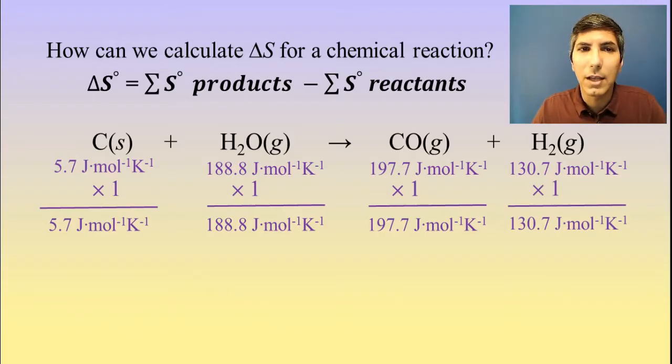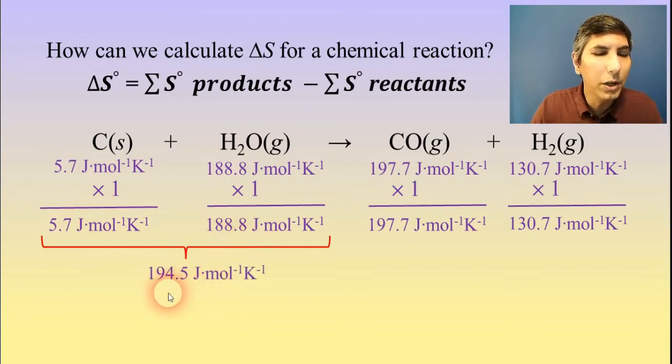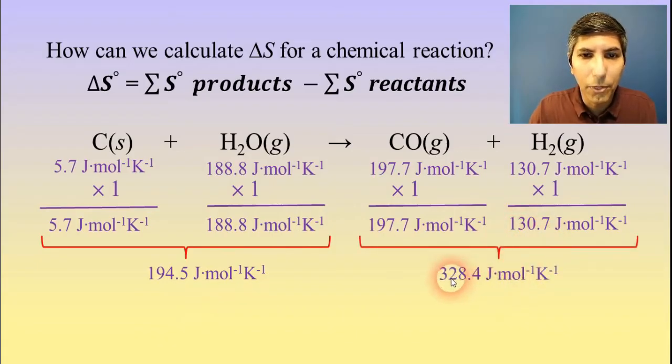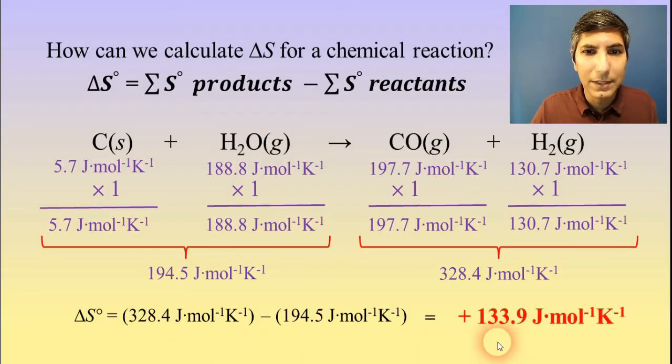Now what we're going to do is take the sum of the products and subtract the sum of the reactants. So if we take the reactants over here, 5.7 plus 188.8, that adds up to 194.5 joules per mole per Kelvin. On the product side, 197.7 plus 130.7 gets us a total of about 328.4 joules per mole per Kelvin. So once again, delta S is products minus reactants, that's the right side minus the left side. So when I compute 328.4 minus 194.5, I'm going to find the overall delta S for this reaction, which is a positive 133.9 joules per mole per Kelvin.